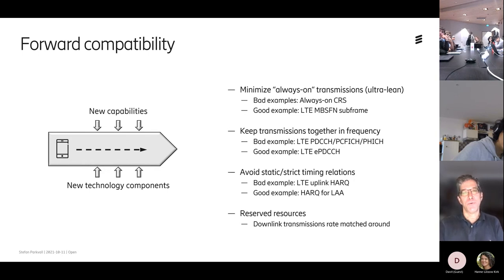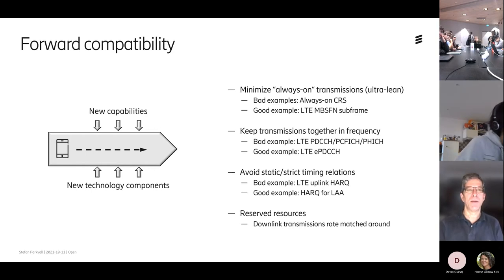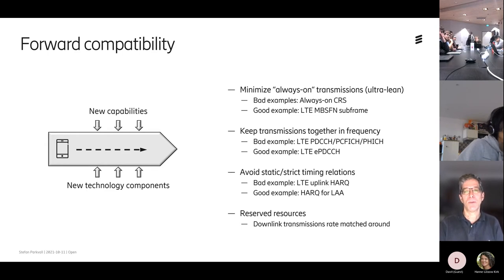Forward compatibility bridges nicely to ultra-lean. Two key aspects: minimize always-on transmissions, and keep transmissions together in frequency — don't spread channels across the full bandwidth statically. Dynamic spreading as part of scheduling is fine, but no fixed resources spanning the full bandwidth. Similarly in time, avoid fixed timing relations that block resources in the other direction.